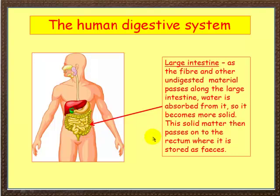So that's the large intestine. It's important to have fibre in your diet, because fibre helps the passage of food all the way down through the system.